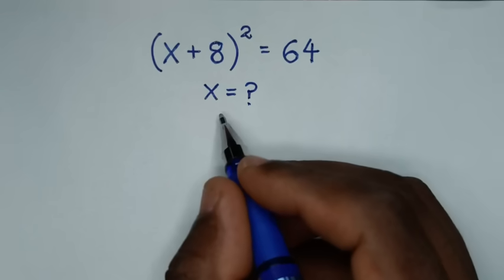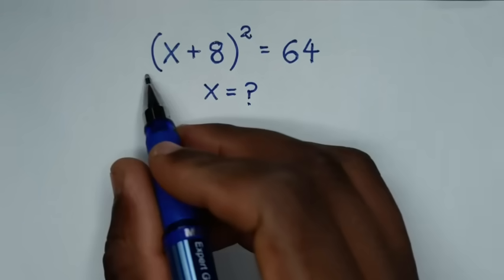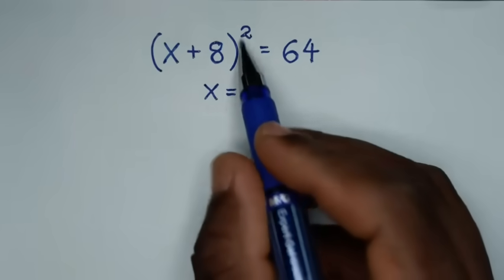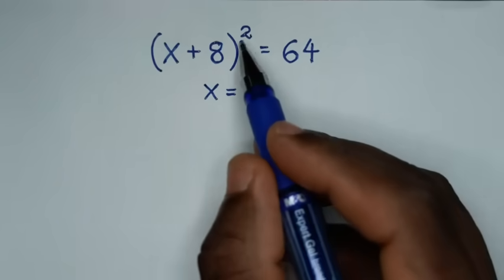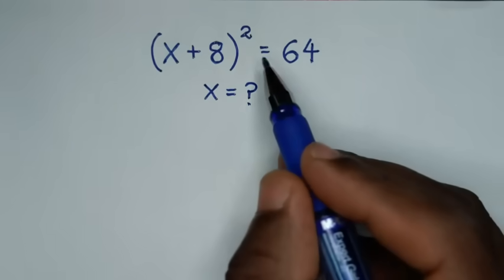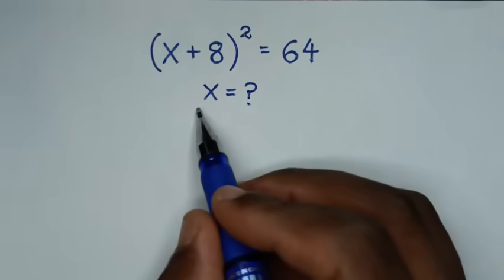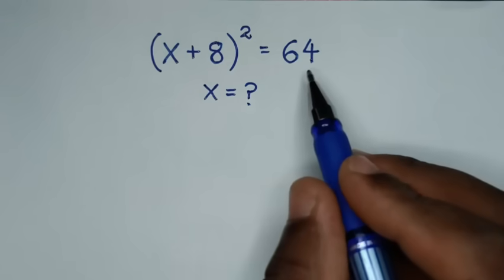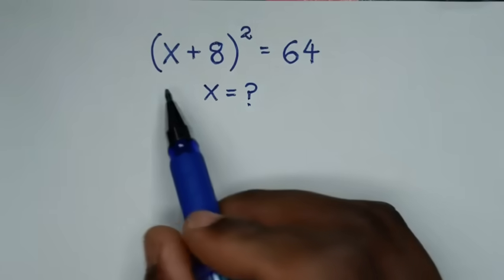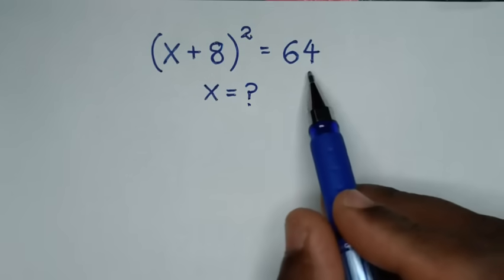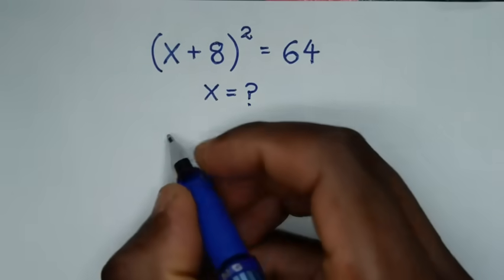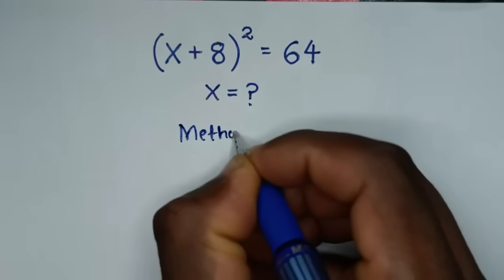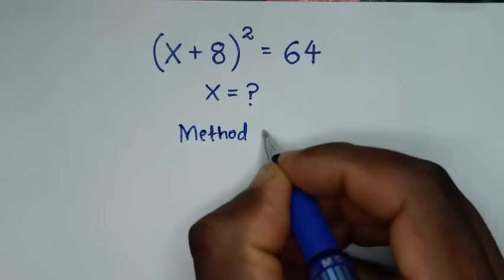Hello, you are welcome to solve this math problem which is (x + 8)² = 64, to find the values of x from this equation. Now to solve this problem we have two methods, so let's call this Method 1.